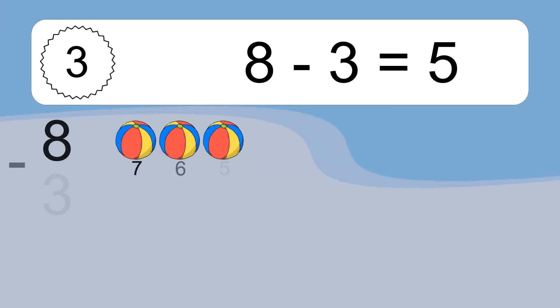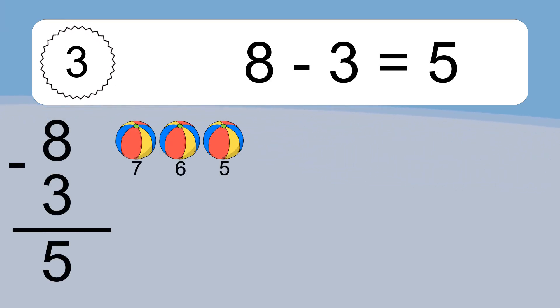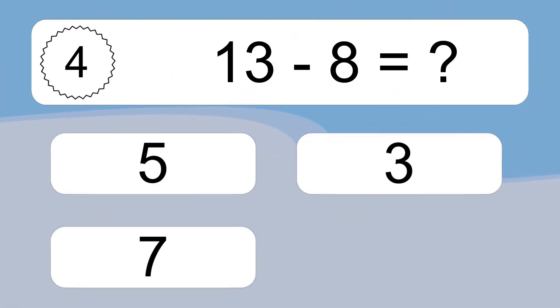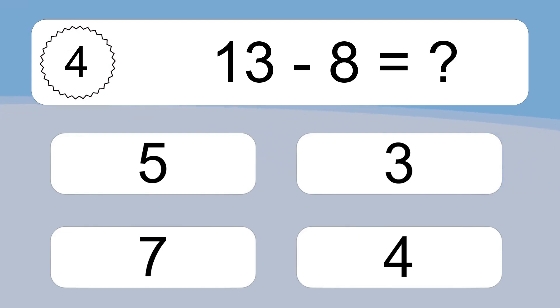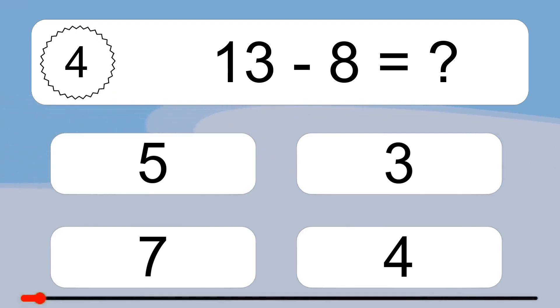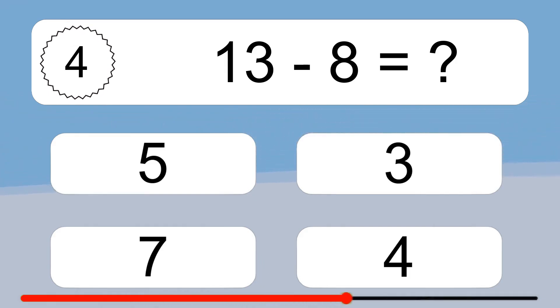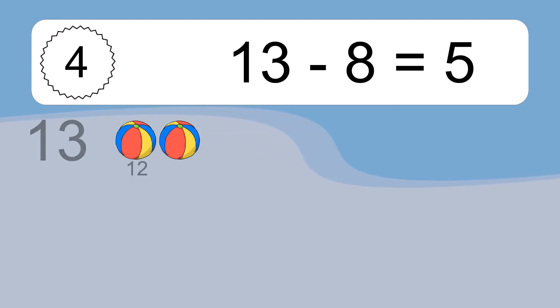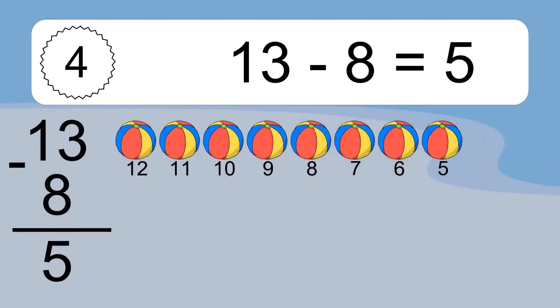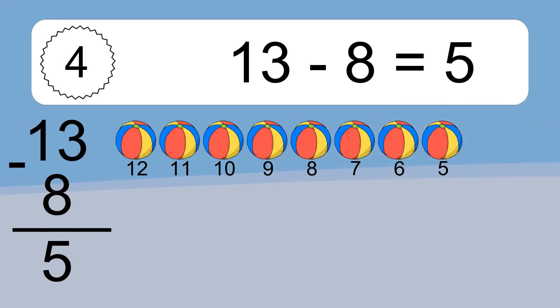8 minus 3 equals what? 8 minus 3 equals 5. Let's count it: 7, 6, 5. 13 minus 8 equals what? 13 minus 8 equals 5. Let's count it: 12, 11, 10, 9, 8, 7, 6, 5.